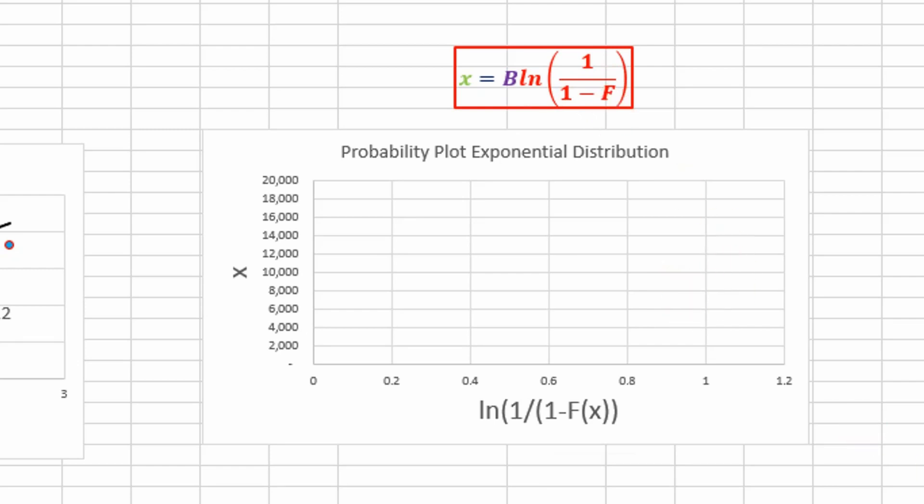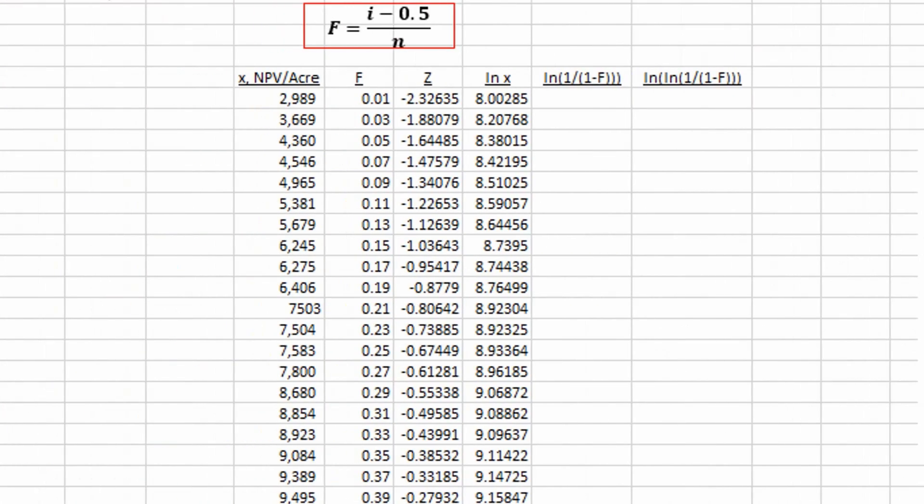If we go over here, we already have our random variables x, so now we just need to create our x-axis values right here using the cumulative probability values. That's simply the natural log of 1 divided by 1 minus the cumulative value.